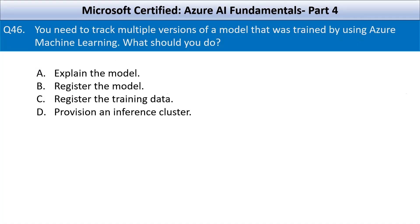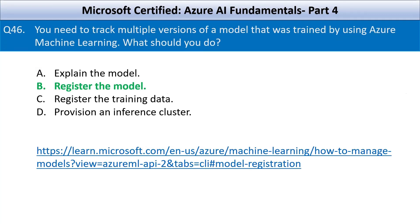Question number 46: you need to track multiple versions of a model trained by using Azure Machine Learning. What should you do? Your options are: explain the model, register the model, register the training data, or provision an inference cluster. In Azure Machine Learning, when you register a model it is stored in the Azure ML workspace, and each registration can be assigned a version number. This allows you to track multiple versions of the same model, deploy different versions for testing or production, and roll back to a previous version if needed.